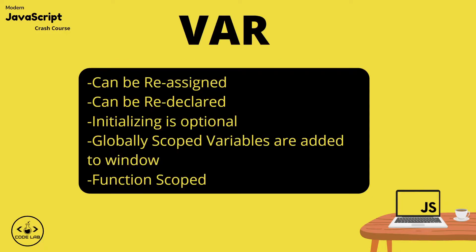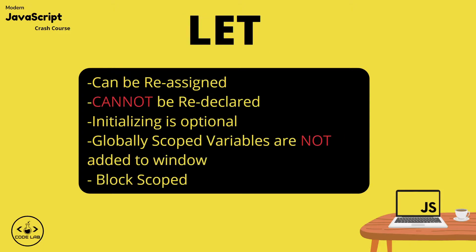So now we have a little bit of knowledge regarding the history of the keywords, let's get into their specifics and how they differ. We'll start off with the var keyword. The var keyword can be reassigned, it can be redeclared, the initialization is optional, any globally scoped variables are added to the window, and the var keyword is function scoped.